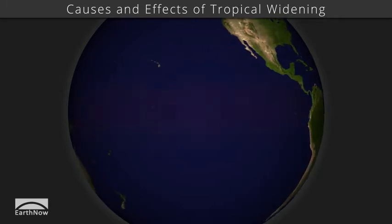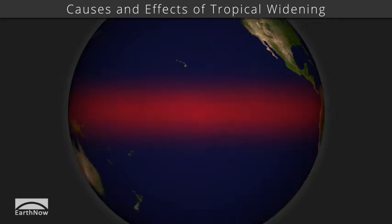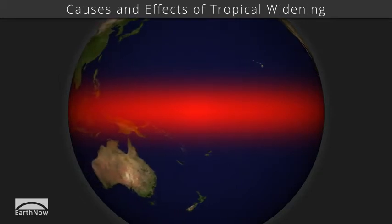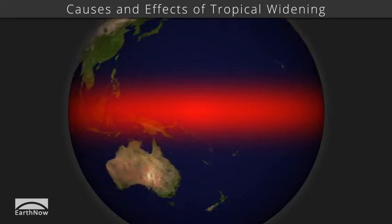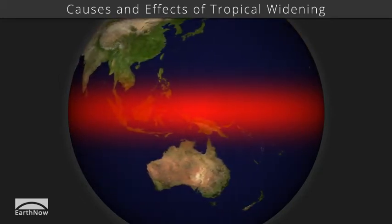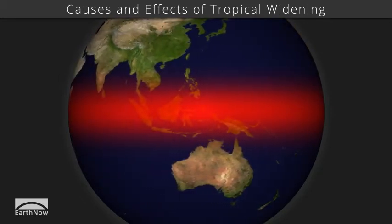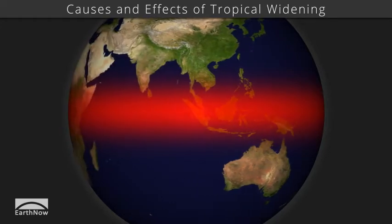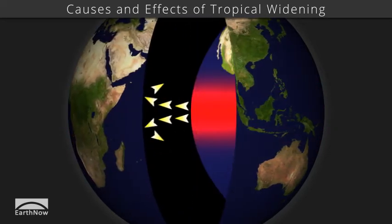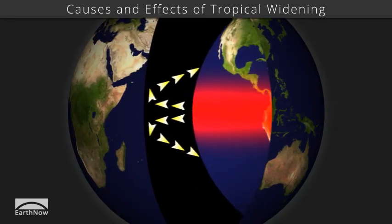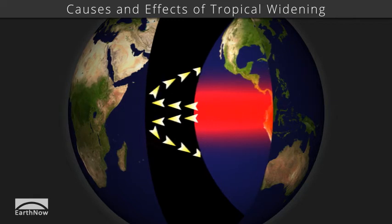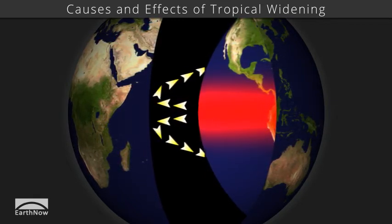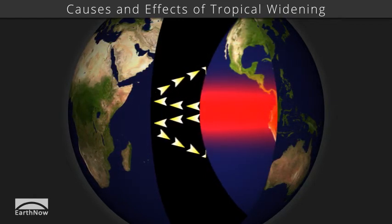When the sun heats land and ocean around the equator, warm, moist air rises, creating clouds, storms, and rain. The air loses heat and moisture through the rainfall. At the top of the atmosphere, the air moves away from the equator towards the poles, sinking as drier air in the subtropics.